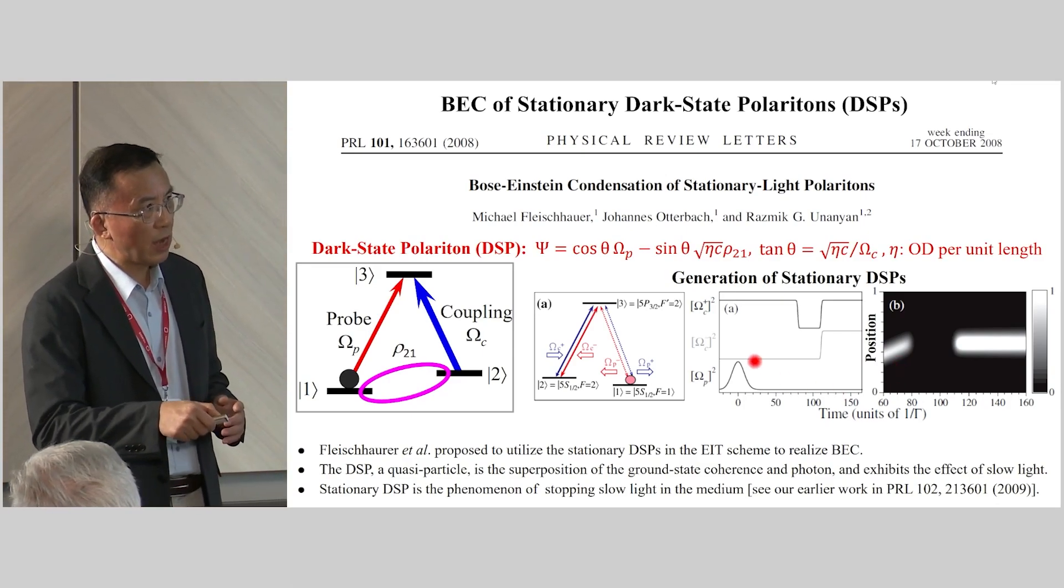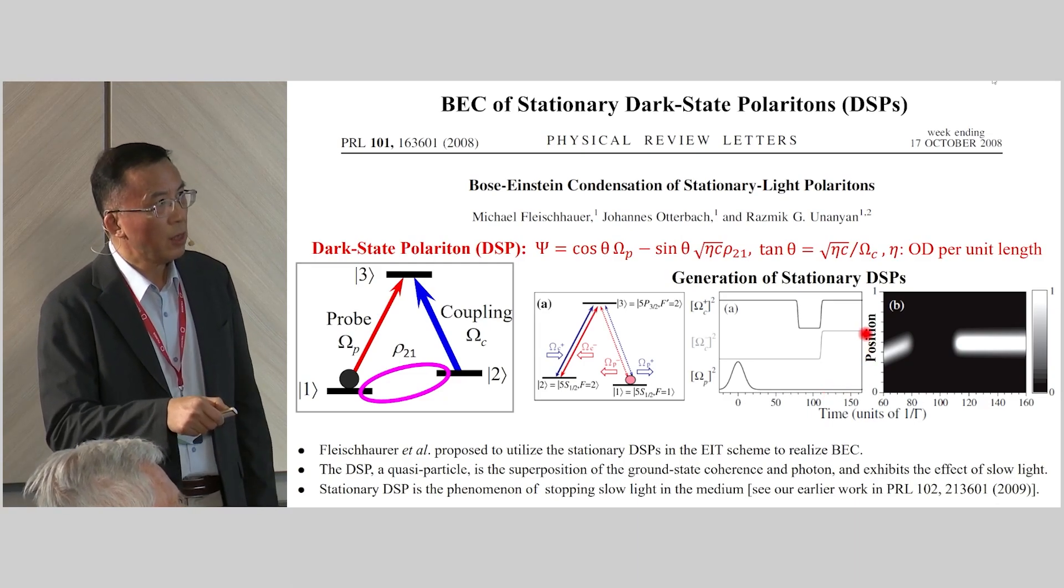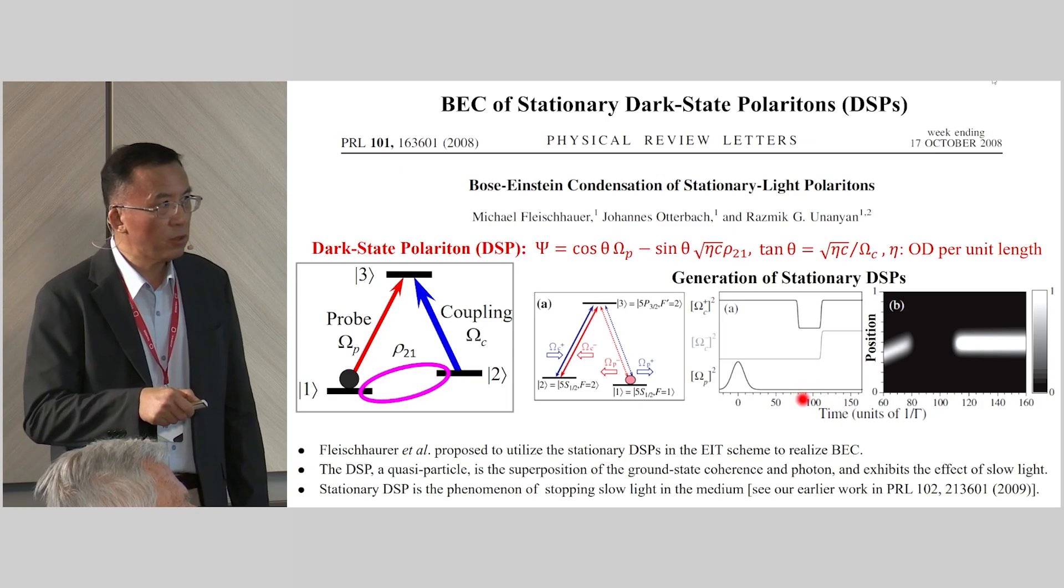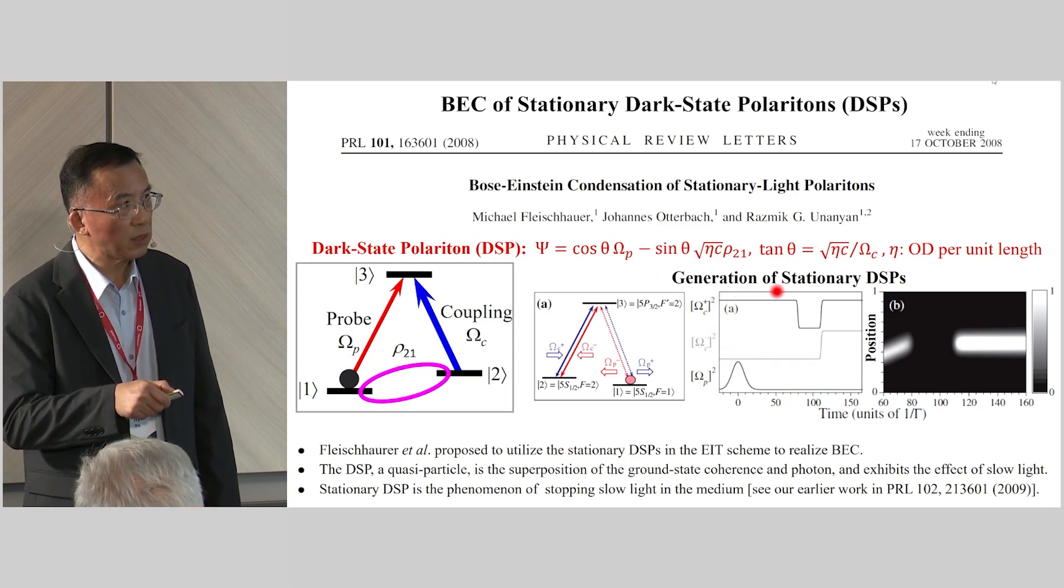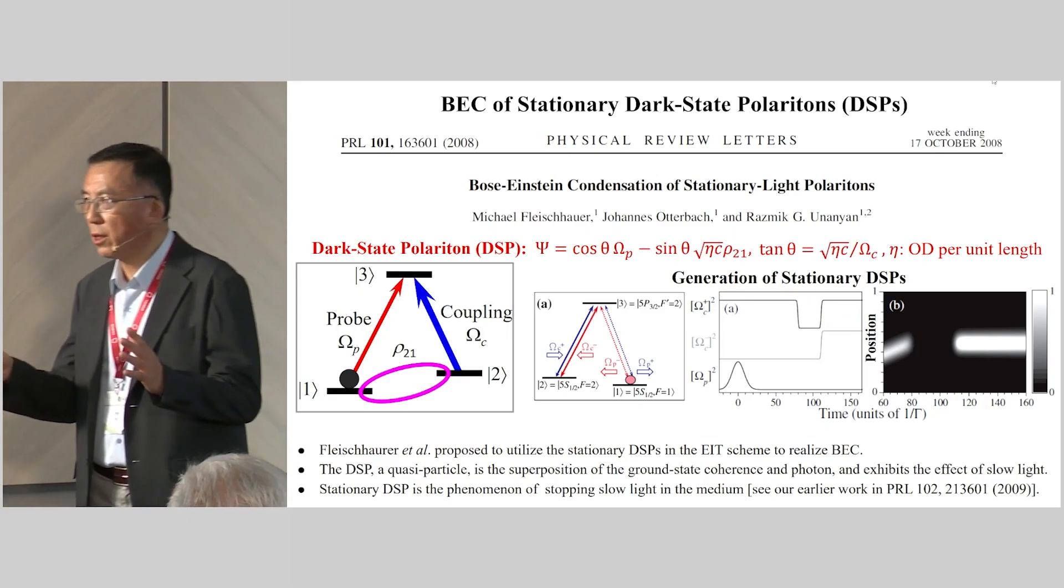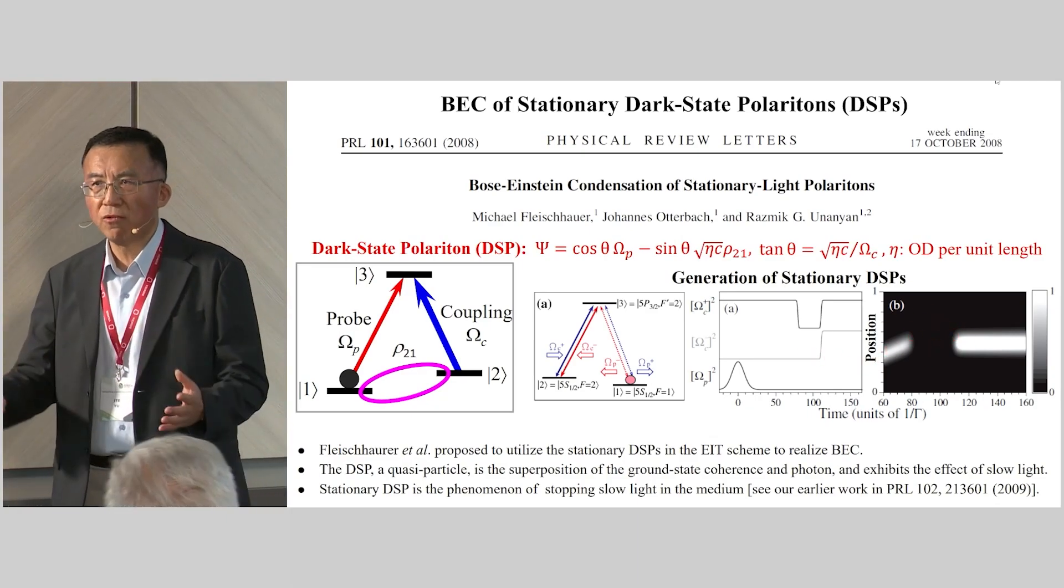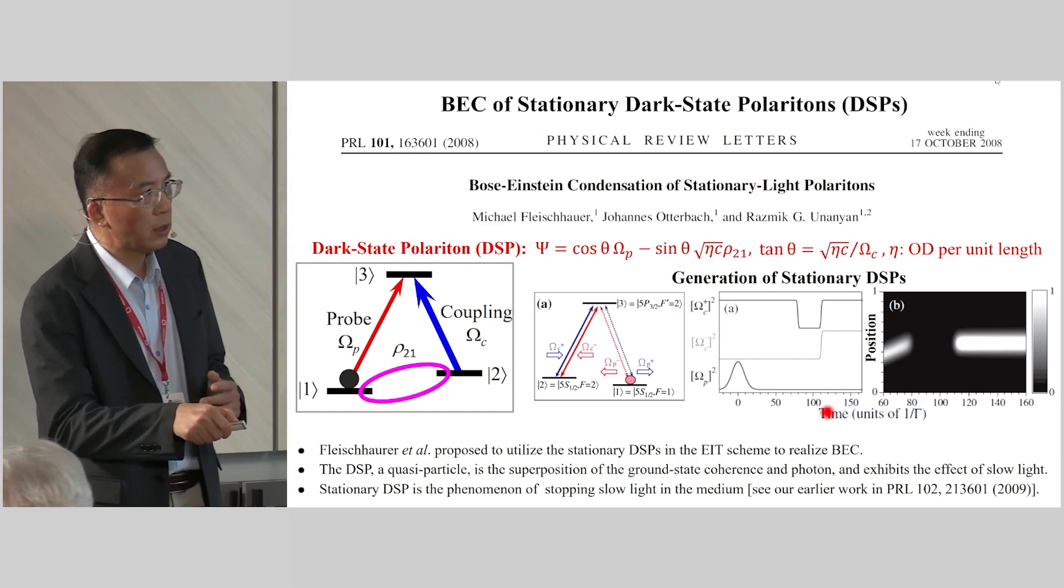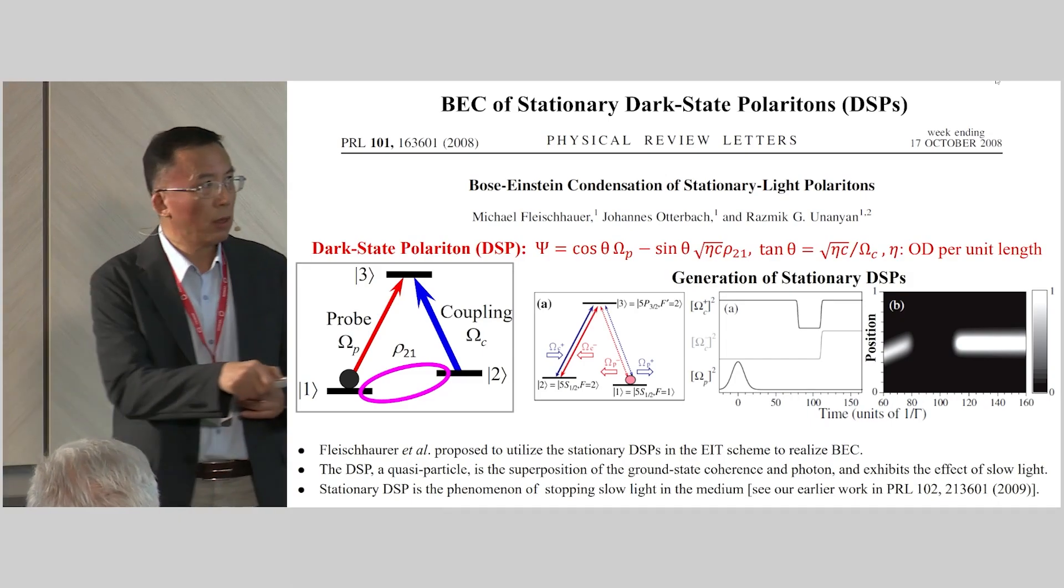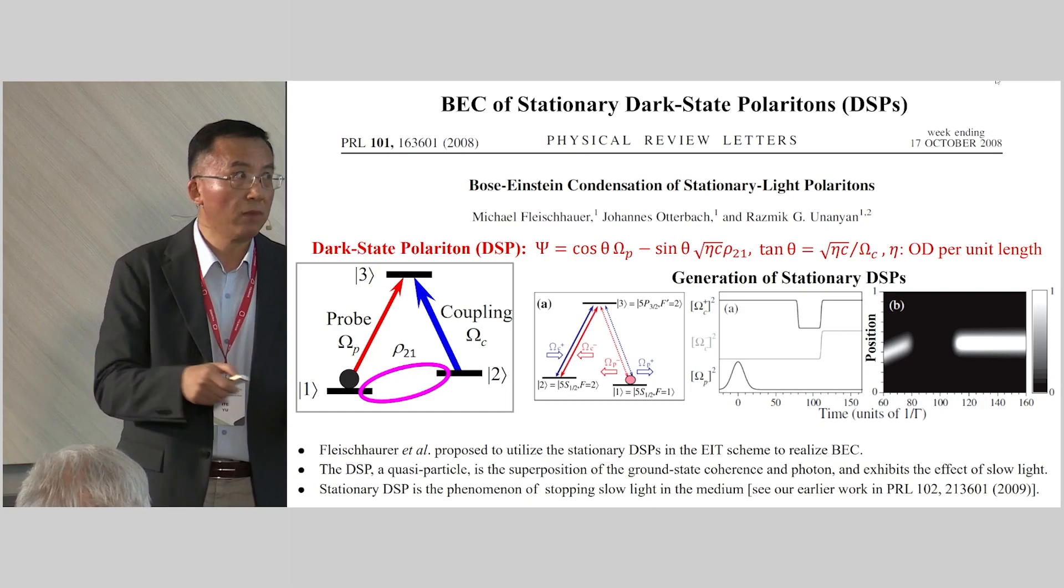Actually, you just turn on the forward coupling field to create a photon inside atomic media, making them move back and forth and trapped inside the atoms. I will use this timing diagram and gray-level map to show how we create stationary DSP. In this gray-level map, we show probe intensity as a function of position and time. First, we send in a probe pulse in the forward direction in the presence of forward coupling field. So this probe pulse is just moving in the forward direction. After the entire probe pulse entered the atom, we quickly turn off the coupling field. For this period, there's no light at all because we convert the probe photon into the atomic coherence. Then around 100 time units, we simultaneously turn on the coupling field in the forward and backward direction. We just create a photon moving back and forth in the atomic media, so they become stationary.